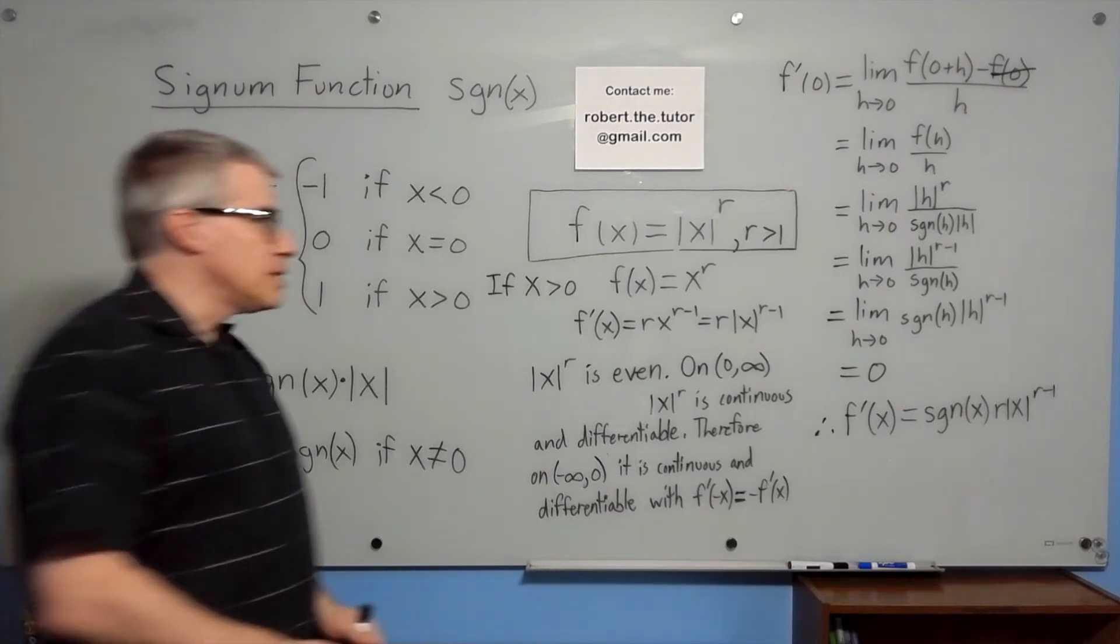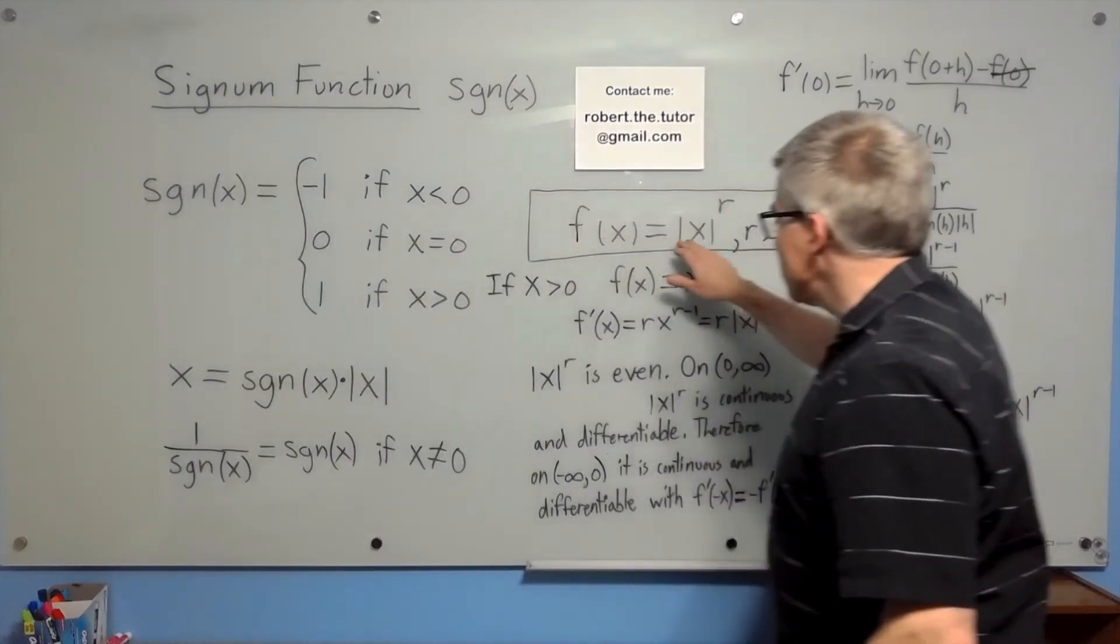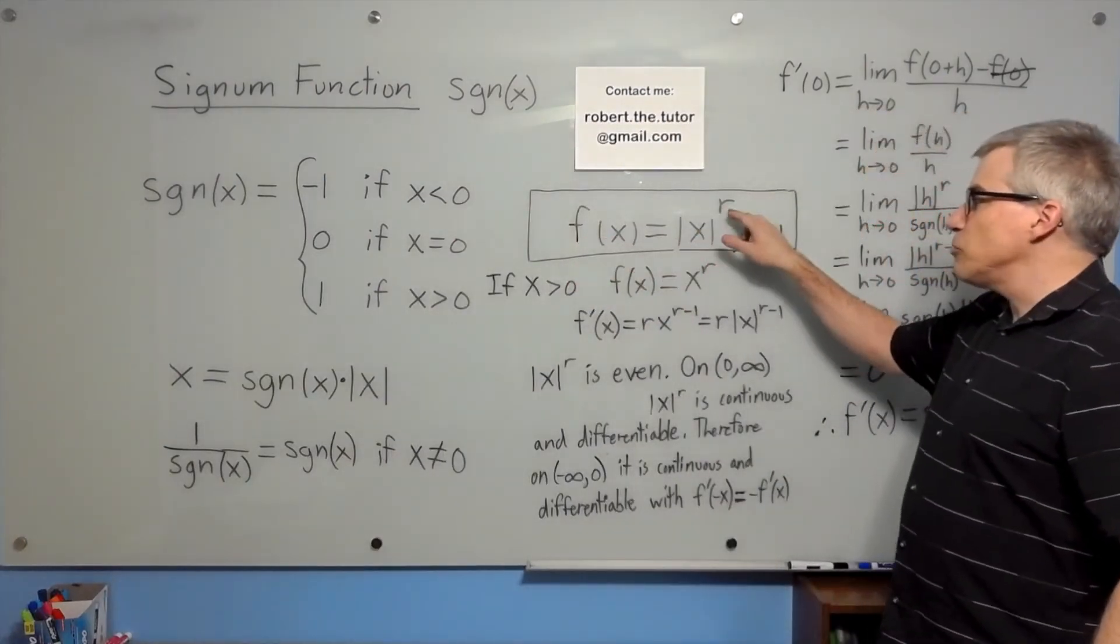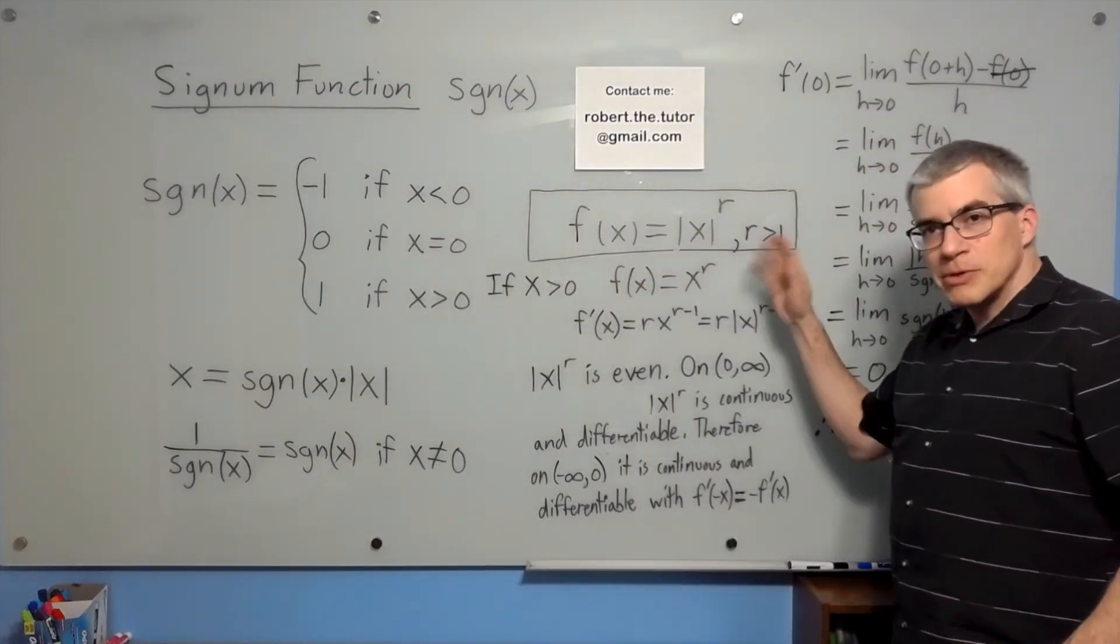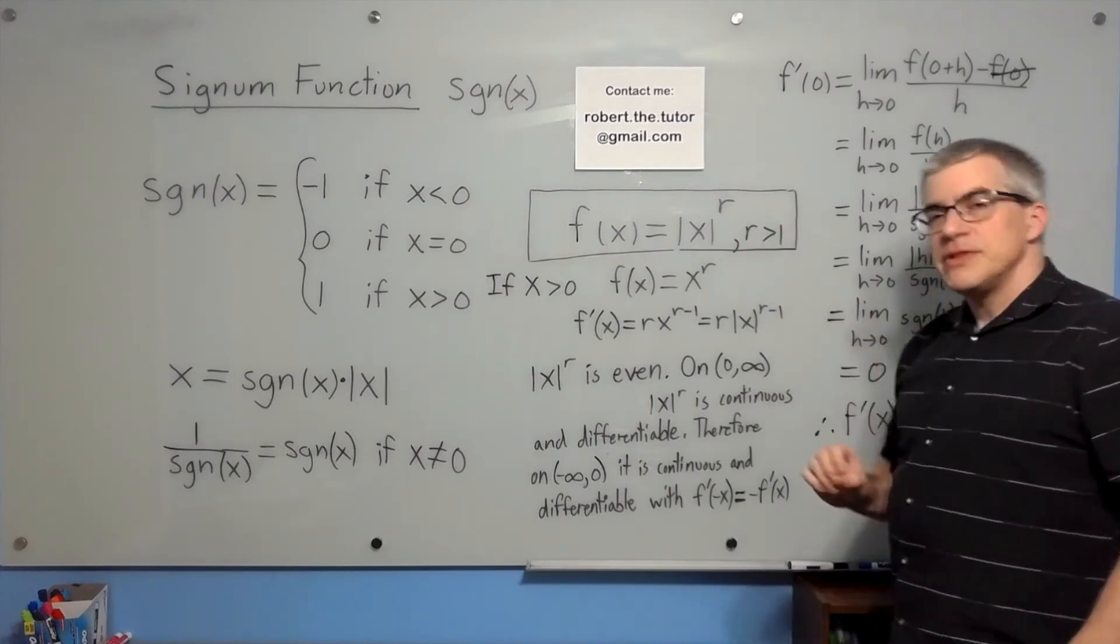Now for the example. Suppose we have f of x is the absolute value of x raised to the r, where r is greater than one. How do we find the derivative of that?